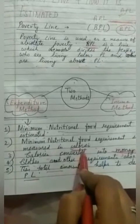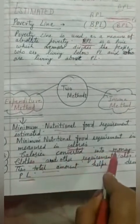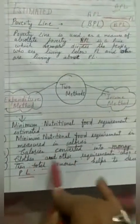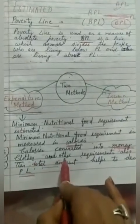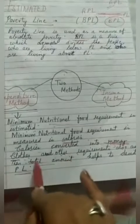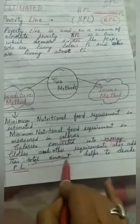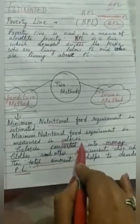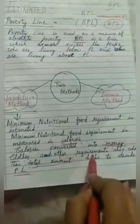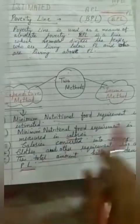Doctors tell us and product labels also show how many calories a food item provides. We convert those calories into money. To that money value we add other basic requirements: clothes, basic education facilities, sanitation facilities, and drinking water. We add all these basic necessities, and from the food requirement value converted into money plus these other requirements in money, we arrive at the poverty line.